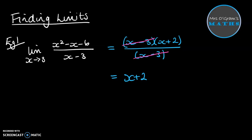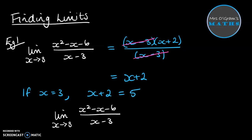So then if we substitute in, so if x is equal to 3, x plus 2 would be equal to 5. So therefore, the limit of what that can become is 5.